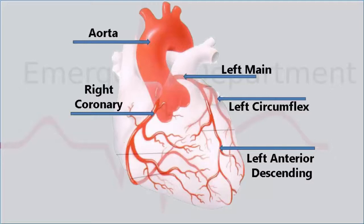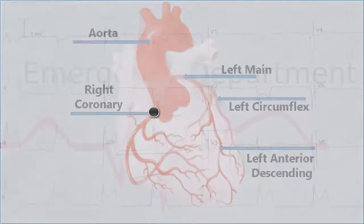Now if we obstruct the right coronary artery approximately up here, we're going to get a fair bit of the right ventricle infarcted and this is the sort of ECG we'll see.